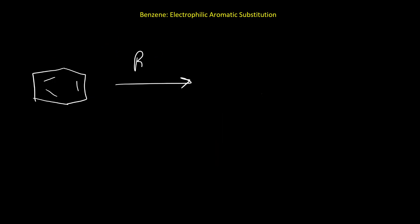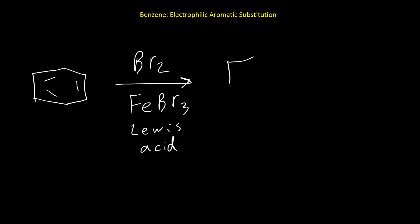Let's see how we can make different types of electrophiles for this reaction. Benzene and bromine alone don't react with each other. But if we use a Lewis acid catalyst such as FeBr3 — iron has vacant orbitals and can play the Lewis acid role — then the reaction proceeds. The product has Br in place of hydrogen, and the hydrogen combines with another bromine to produce HBr.